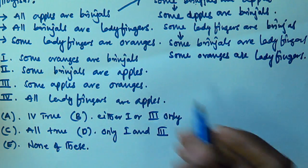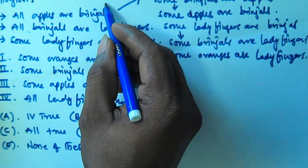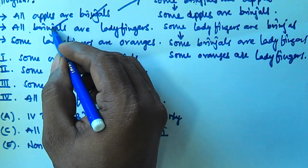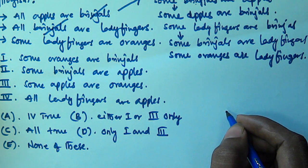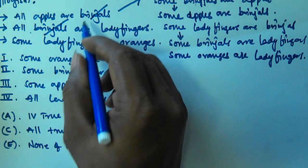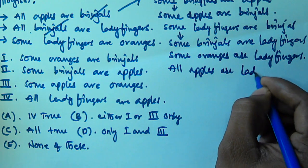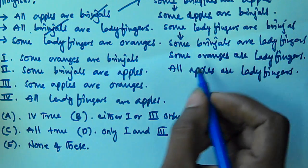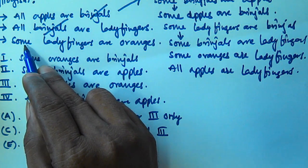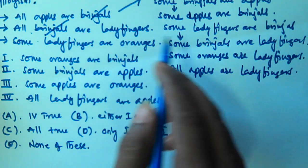Now combining the first two statements alone: All apples are brinjals and All brinjals are ladyfingers. The predicate of the first one is equivalent to the subject of the second one, and both are 'all'. So according to the rule All plus All equals All — as explained in the first video in this playlist — from these two we will get All apples are ladyfingers. Here ladyfingers are there, so the first one starts with all and second with some, so All plus Some means we cannot derive anything further according to syllogism rules.